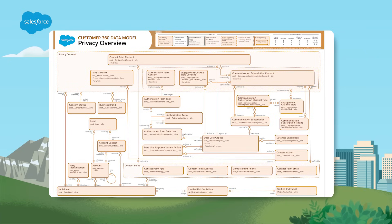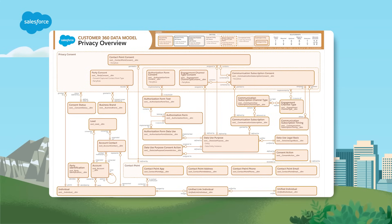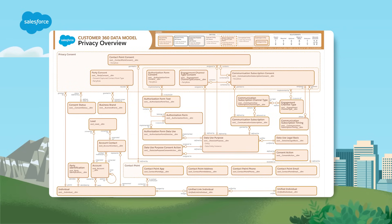Now let's take a broader view for a moment. Across many of these industry specific use cases, the privacy data model in Data Cloud can be used to manage your consent data. Regardless of your industry, this allows you to incorporate customer consent into segmentation processes. A consent API allows real-time consent updates directly to Data Cloud.